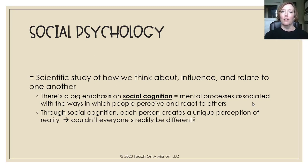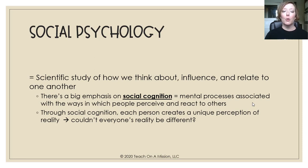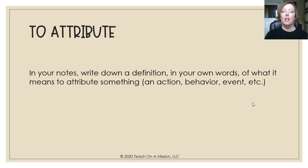There is a give and take here — a relationship. There's a big emphasis on social cognition, or in other words, the mental processes associated with the ways in which people perceive and react to others. Through social cognition, each person creates a unique perception of reality — basically, everyone has their own perception of what's really happening.